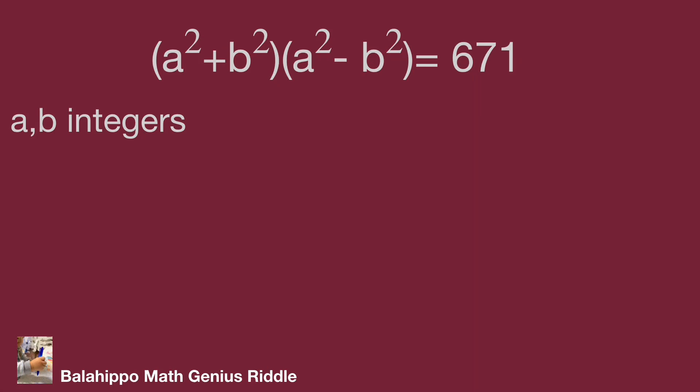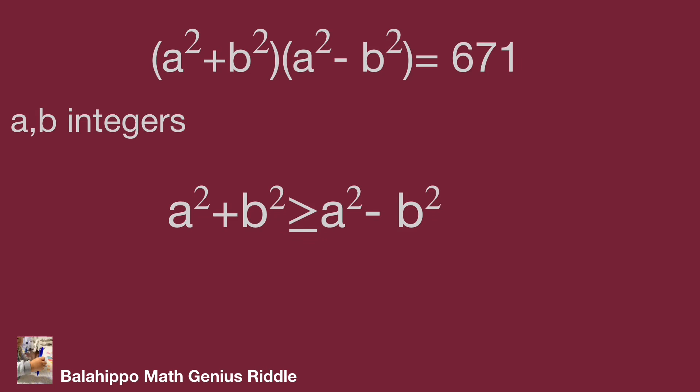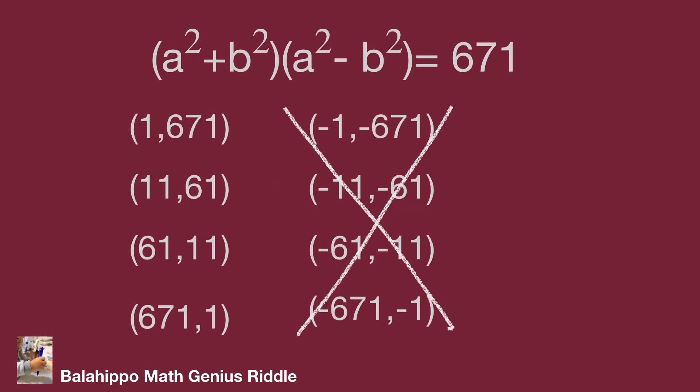Back to the equations: (A² + B²) × (A² - B²) = 671, where A and B are integers. We also apply the condition that A² + B² is greater than or equal to A² - B². Adding this condition to our number groups, we remove the 671 × 1 and 1 × 671 cases. Good — there are only two number groups remaining in the list.